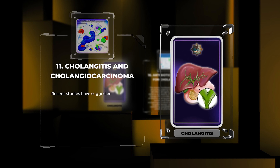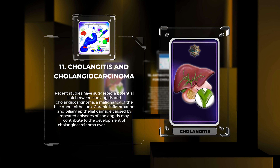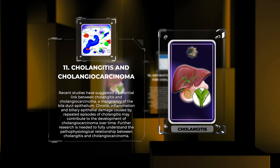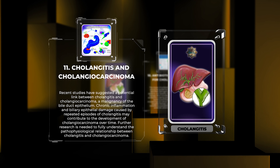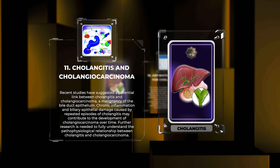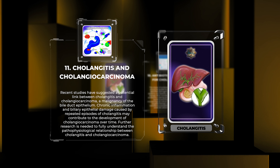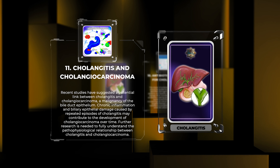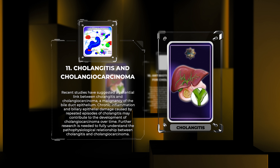Recent studies have suggested a potential link between cholangitis and cholangiocarcinoma, a malignancy of the bile duct epithelium. Chronic inflammation and biliary epithelial damage caused by repeated episodes of cholangitis may contribute to the development of cholangiocarcinoma over time. Further research is needed to fully understand the pathophysiological relationship between cholangitis and cholangiocarcinoma.